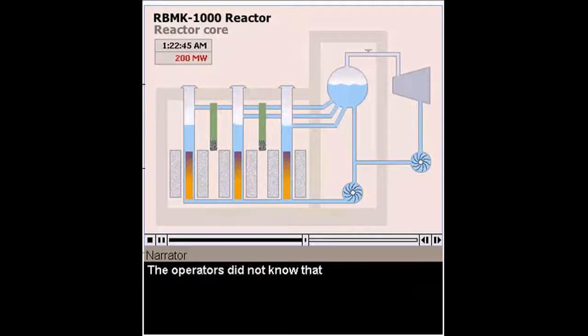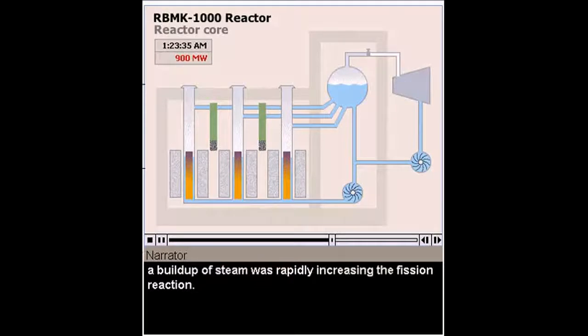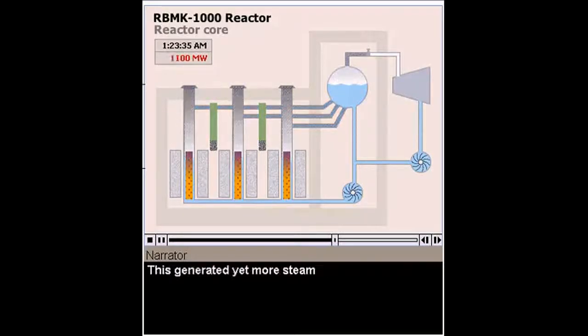The operators did not know that steam was starting to form in the lower part of the core, making the reactor even harder to control. Returning to the test procedure, the operator shut down steam to the single operating turbine generator. As the generator slowed, so did the cooling pumps. Inside the core, a buildup of steam was rapidly increasing the fission reaction. This generated yet more steam, which in turn generated more power. The reaction was now out of control.